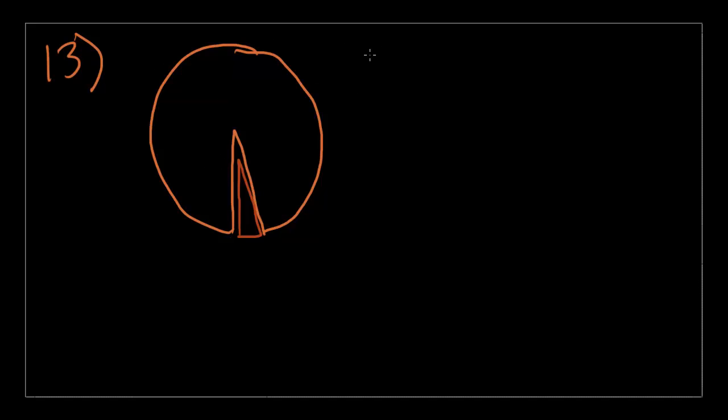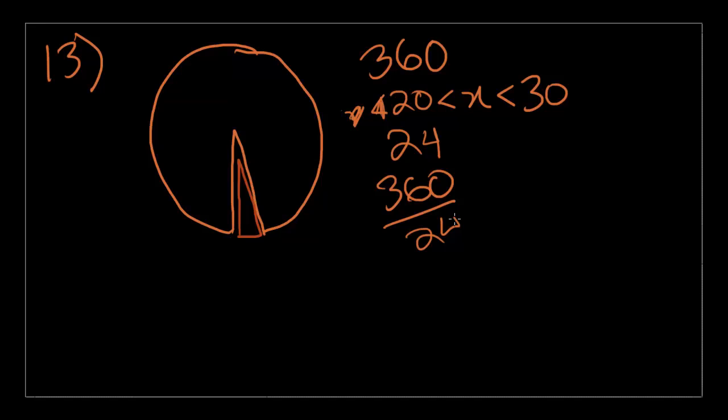Let's do some review. In a circle, there is a total of 360 degrees, and the angle of this slice can be greater than 20, but less than 30. x can be greater than 20, but less than 30. Let's pick an easy number that goes into 360 easily, like, say, 24. It's greater than 20, and is less than 30.